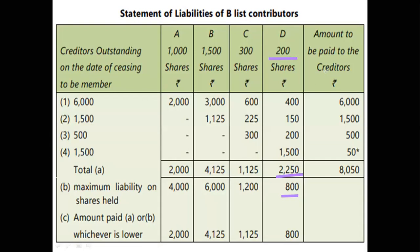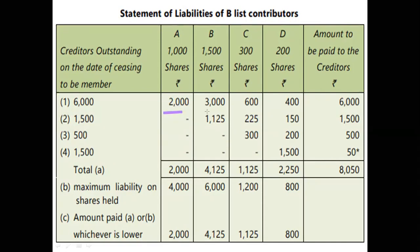If you have the last column, what is the calculation? We have 6,000. We have A: 2,000; B: 3,000; C: 600; D: 400. If you have 6,000 devices.